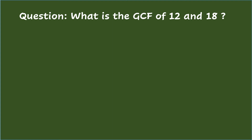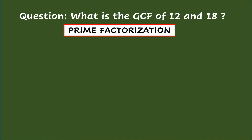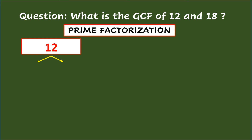Aside from using the listing method, you can also use prime factorization with the use of a factor tree. For the question — what is the GCF of 12 and 18 — starting with 12, you will list a pair of factors. It's best to start with the smallest prime number, which is 2. So you have 2 times 6. Since 2 is already a prime factor, you will leave it. And for 6, which is not a prime factor, continue factoring the number, giving you 2 times 3.